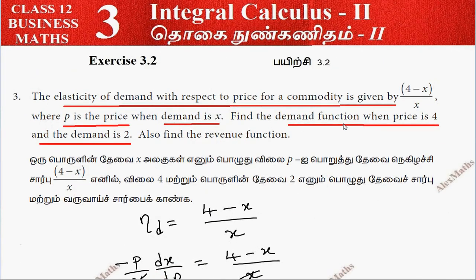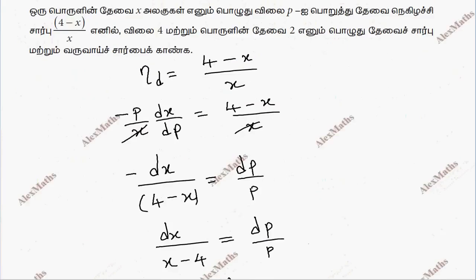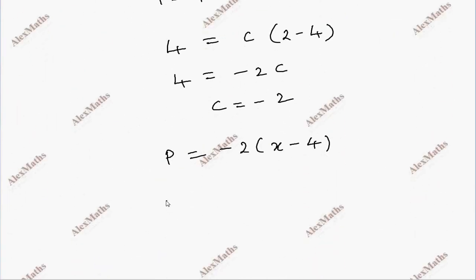We've found the demand function. Also, we need to find the revenue function. The revenue function R equals p times x, which is R equals minus 2 times (x minus 4) times x.